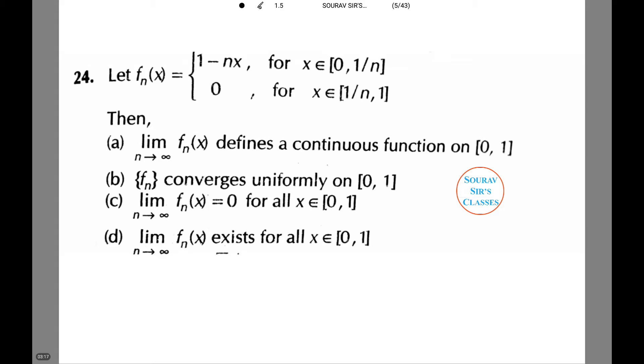In the following one we have a function f_n(x) such that f_n(x) equals 1 minus nx for x belonging between 0 and 1/n, and 0 for all other values belonging between 1/n and 1. We need to figure out which of the following statements is correct.